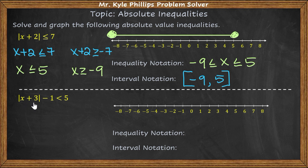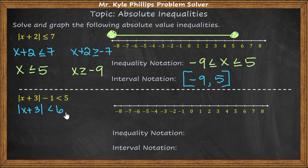Let's try another one. We have the absolute value of x plus 3, minus 1 — less than 5. Remember, you cannot do anything until the absolute value is isolated, so I add 1 first. Now I have the absolute value of x plus 3 is less than 6. I set it up as: x plus 3 is less than 6, and x plus 3 is greater than negative 6.